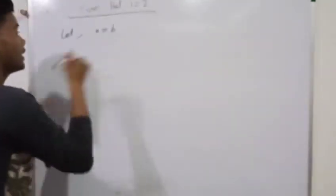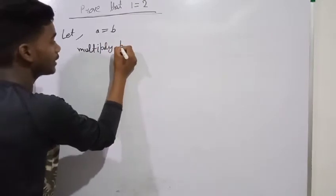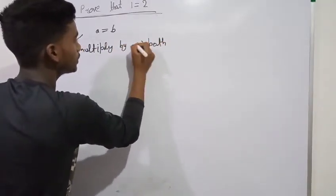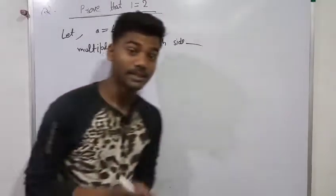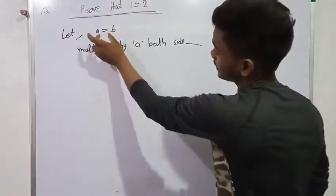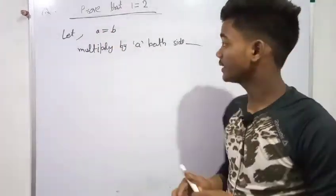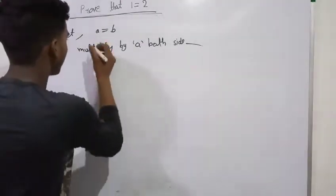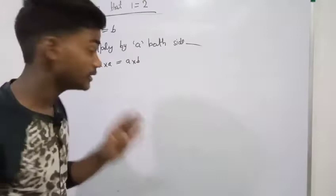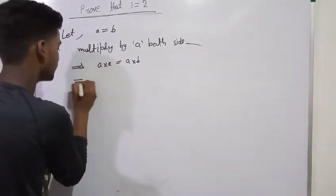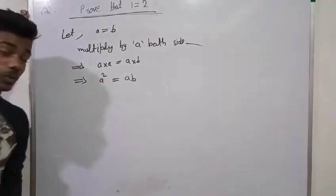What happens here is we can multiply by A on both sides — the right hand side and the left hand side. If we multiply by A on both sides, then A squared is equal to A into B.